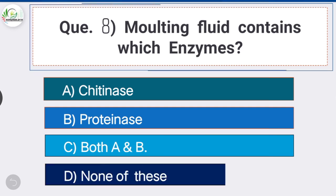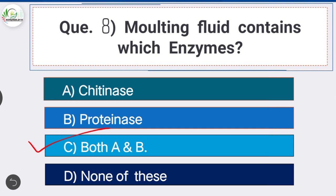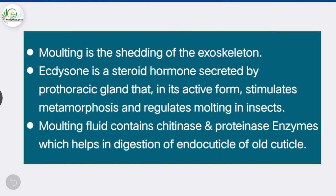Question 8: Molting fluid contains which enzymes? Option C is the correct answer: both chitinase and proteinase. Ecdysone is a steroid hormone secreted by the prothoracic gland that in its active form stimulates metamorphosis and regulates molting in insects. Molting fluid contains chitinase and proteinase enzymes, which help in digestion of the endocuticle of the old cuticle.